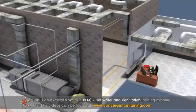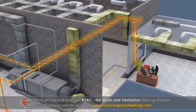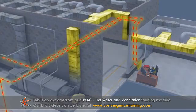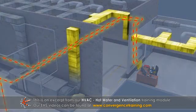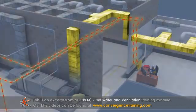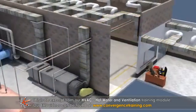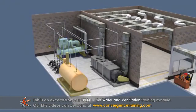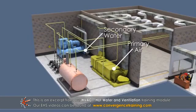In an air-water system, both air and water are used for temperature control in the conditioned spaces. The air and water are cooled or heated in a central plant. The air supplied is called primary air, and the water is called secondary water.